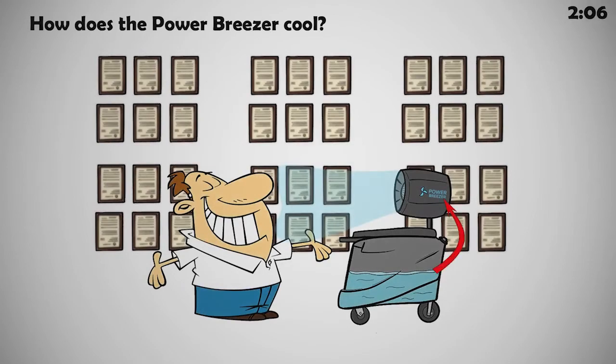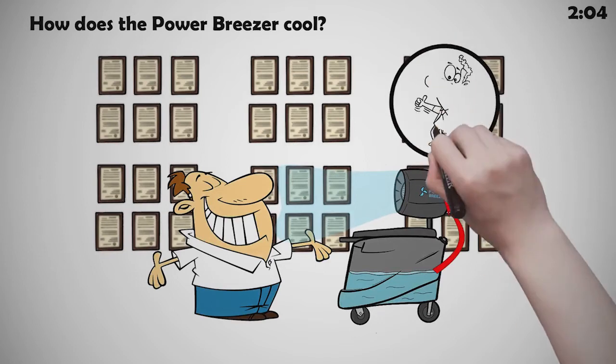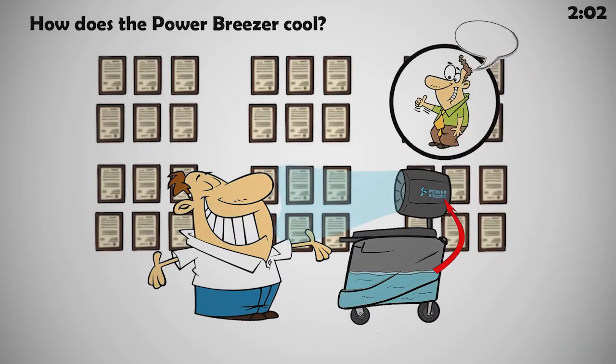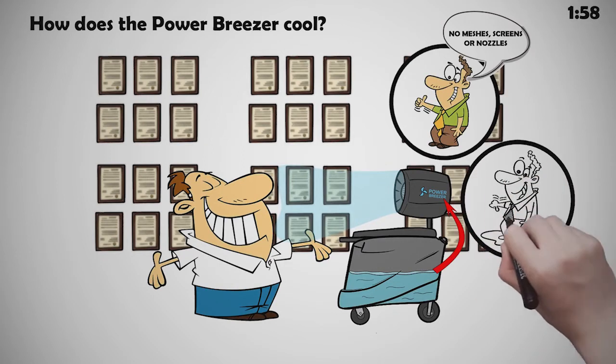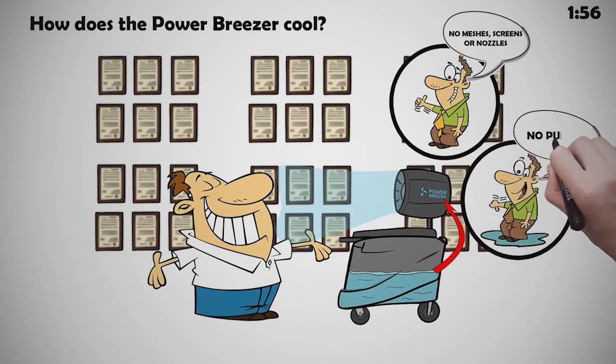Reliably reducing drops of water into mist does not require the use of meshes, screens, or nozzles. These often clog or cake, reducing the flow and causing floor puddles.